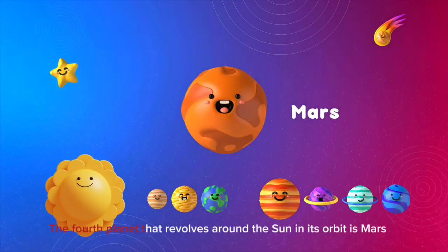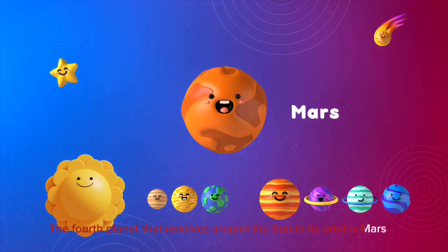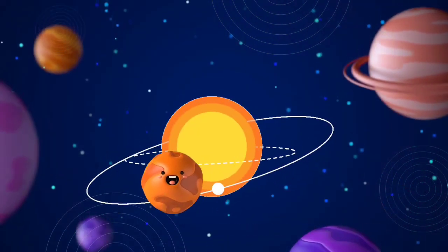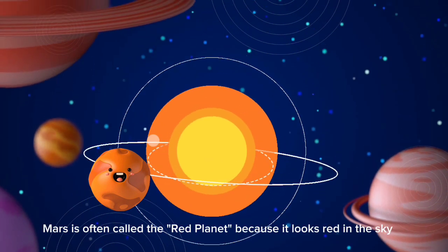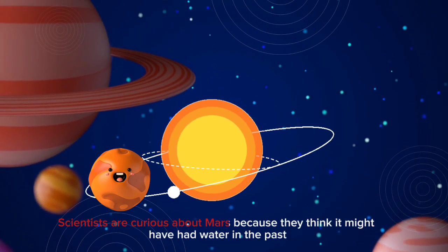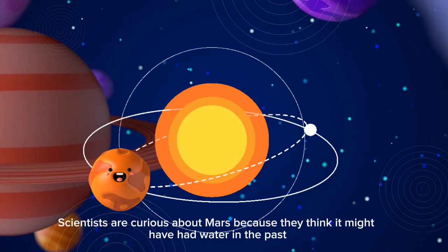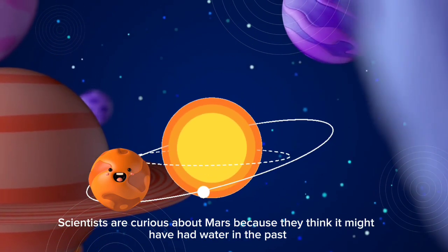The fourth planet that revolves around the sun in its orbit is Mars. Mars is often called the red planet because it looks red in the sky. Scientists are curious about Mars because they think it might have had water in the past.